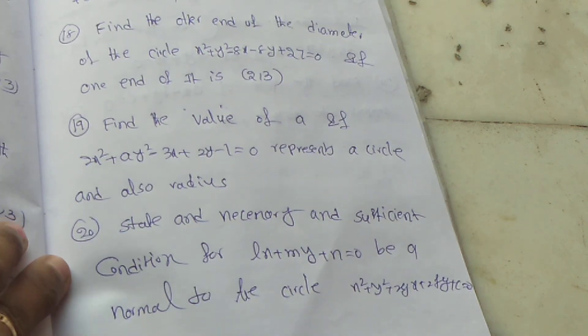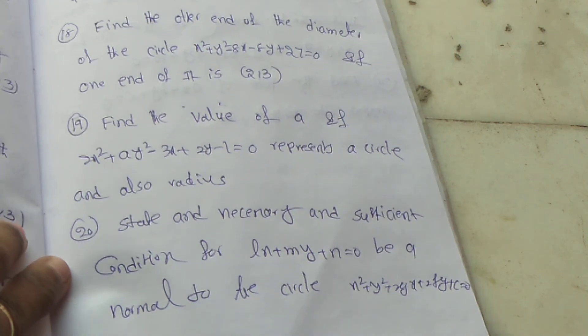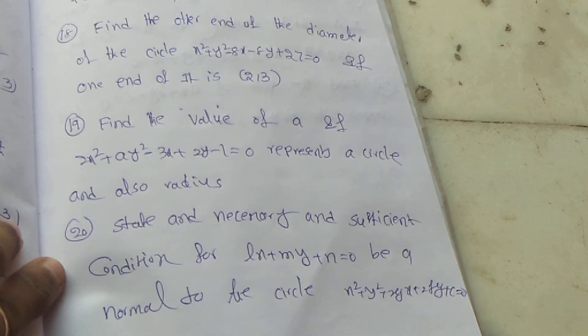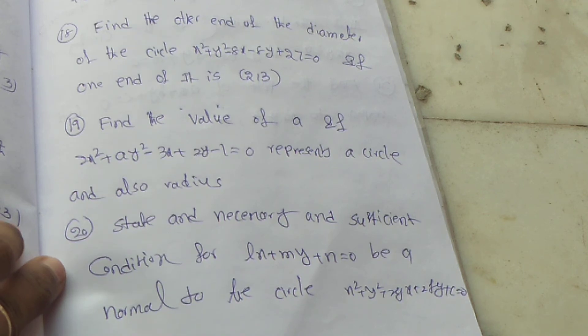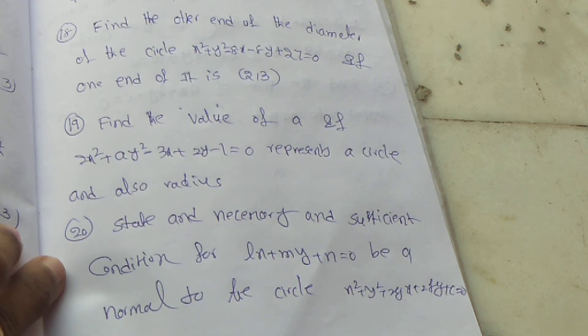Twentieth question: State the necessary and sufficient condition for lx plus my plus n equal to 0 to be a normal to the circle x square plus y square plus 2gx plus 2fy plus c equal to 0.